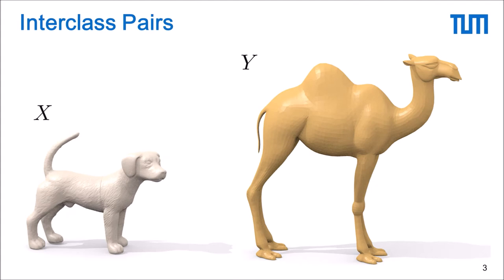However, in practice we find that a lot of interesting matching tasks have non-isometric pairs like for example the interclass pair shown here. We as humans immediately have a strong intuition of where a given point on the dog belongs to on the camel. However, many popular matching methods struggle with examples like this.